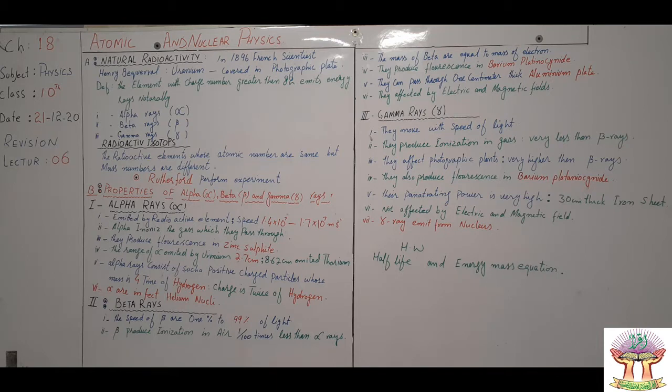Rutherford was the scientist. Properties of Alpha, Beta and Gamma rays: Alpha rays - radioactive elements emit out in quick speed 1.4×10^7 to 1.7×10^7 meter per second. Alpha rays ionize gas and produce fluorescence in zinc sulfate.